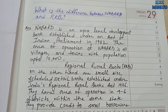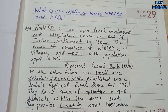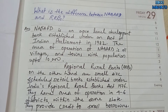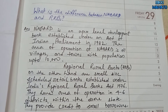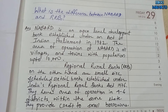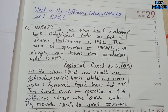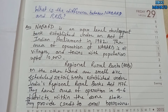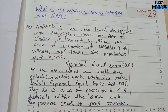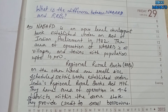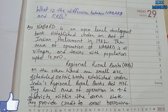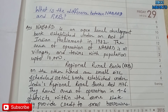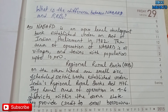The area of operation of NABARD is all villages and towns with population up to 10,000. Regional Rural Banks, or RRBs, on the other hand, are small size scheduled retail banks established under India's Regional Rural Bank Act 1976. They have area of operation in 4 to 6 districts within the same state, and they provide credit to small borrowers.